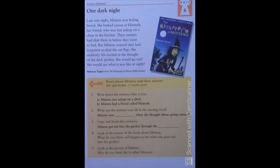We will move to the exercise. Question number 1: Write down the sentence that is true. Option A: Nitens was asleep on a chair. Or option B: Nitens had a friend called Hannah. The correct option is B, which says Nitens had a friend called Hannah.